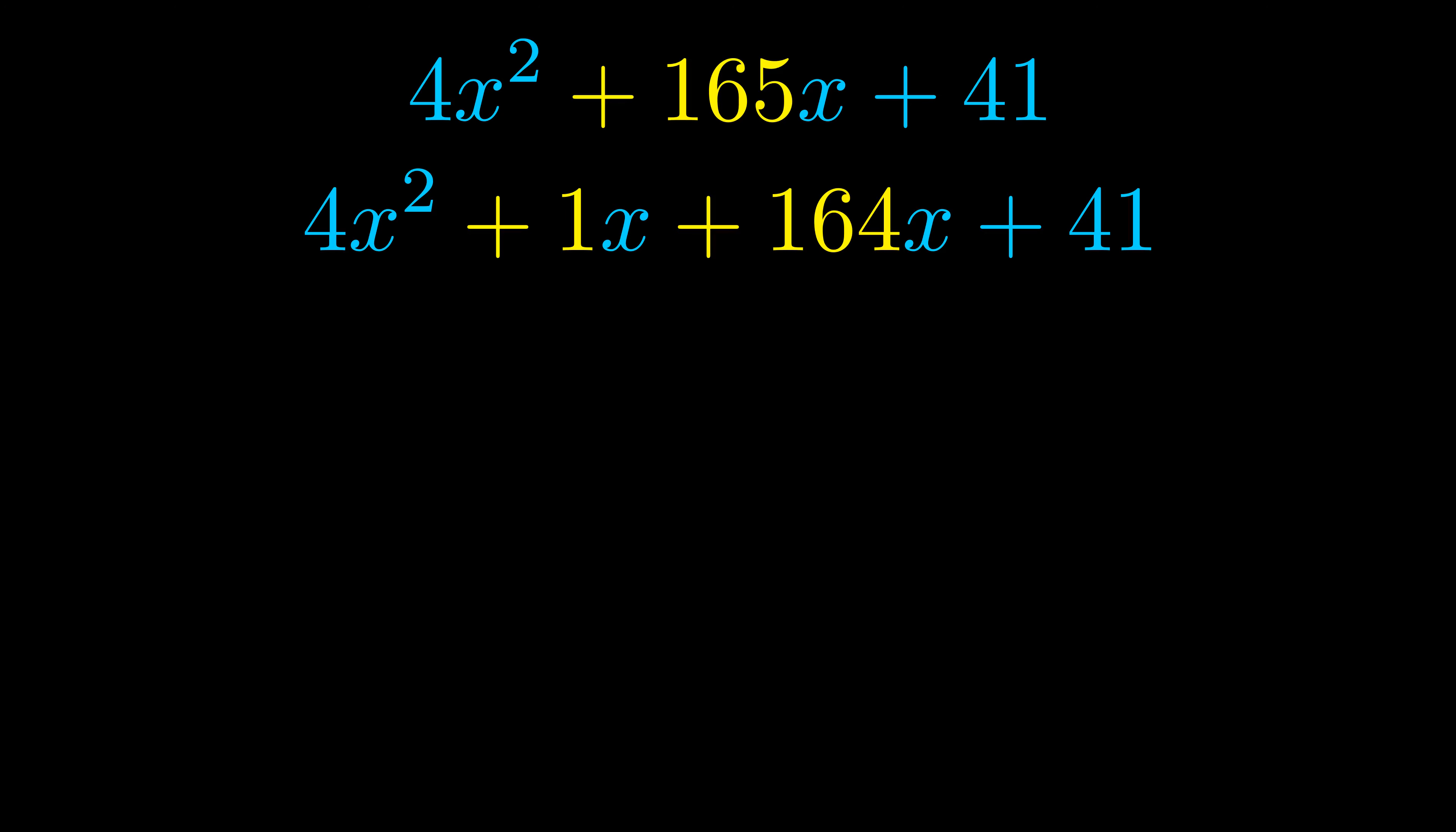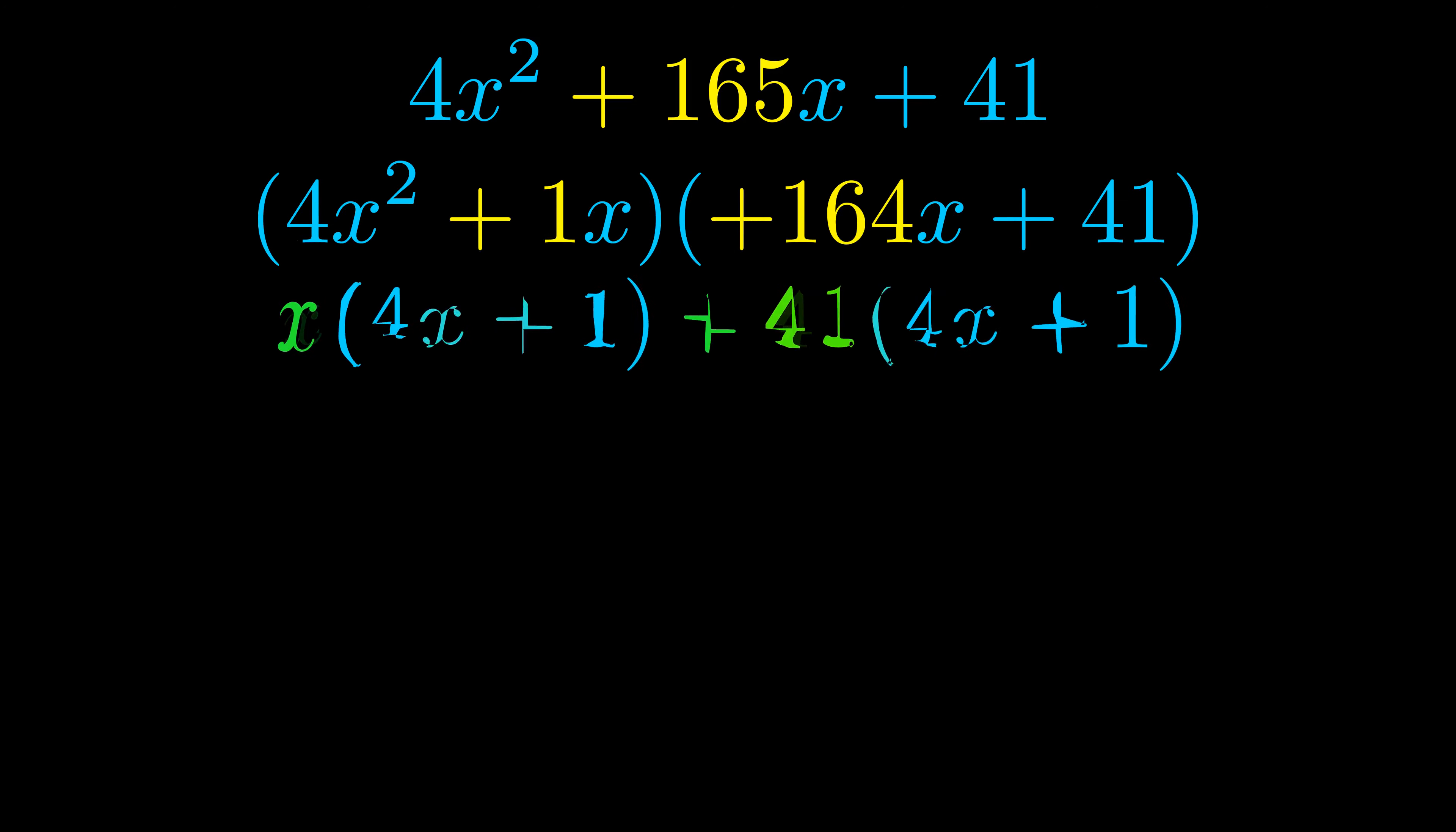Once we've done this we go ahead and we put parentheses around the first term and the last term. And we do that so that we can take the greatest common factor out of both terms. We can see the greatest common factor is now outside in green.